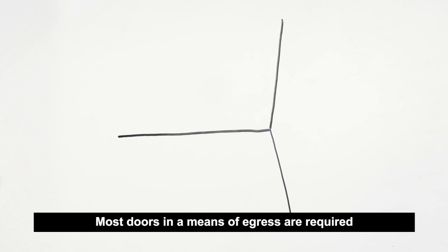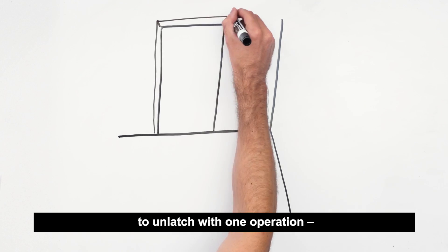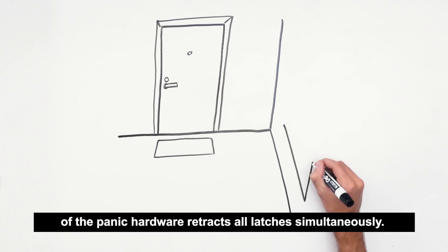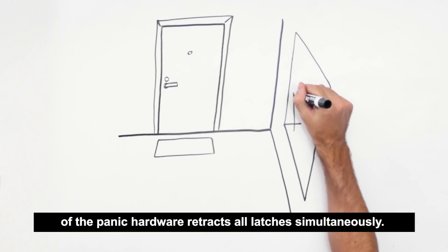Most doors in a means of egress are required to unlatch with one operation. Turning the lever handle or pushing the touch pad or cross bar of the panic hardware retracts all latches simultaneously.